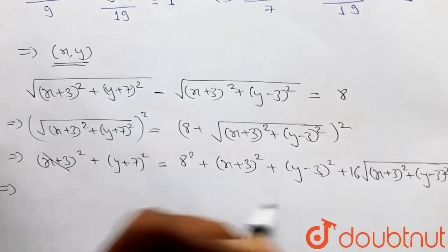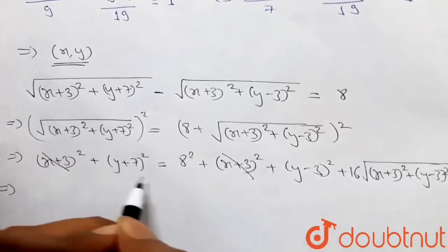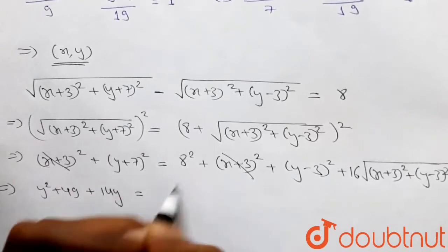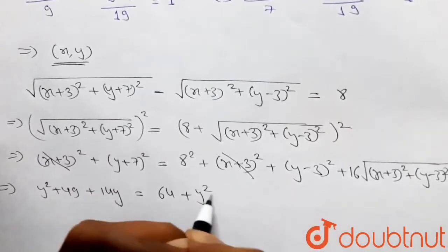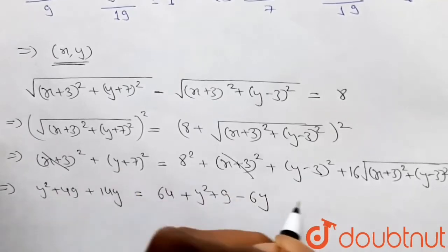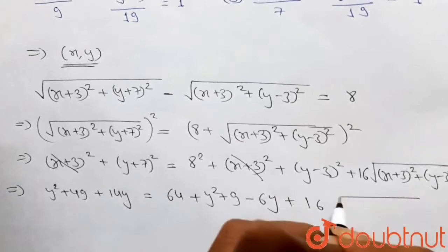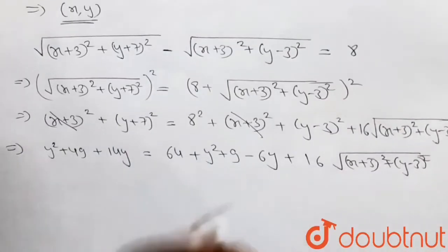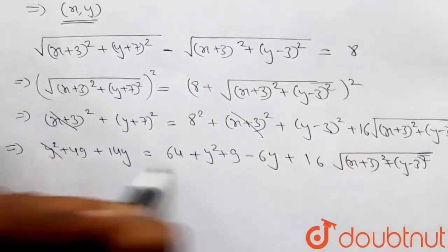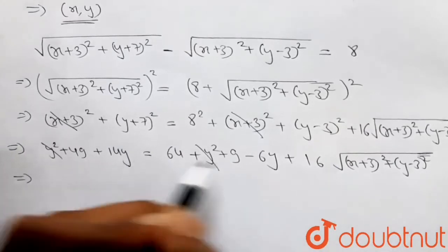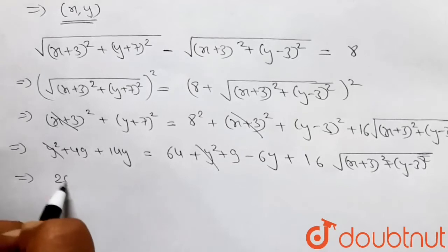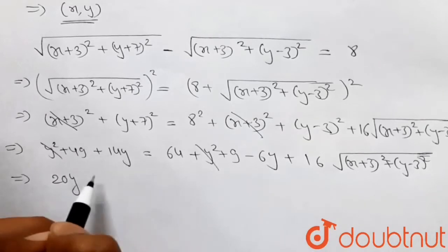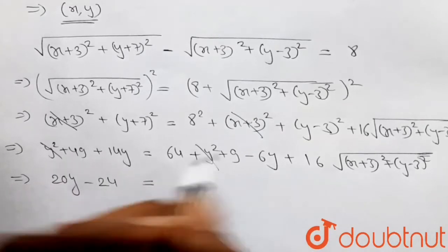The (x+3)² terms cancel. Expanding: y² + 49 + 14y = 64 + y² + 9 - 6y + 16√[(x+3)² + (y-3)²]. The y² terms cancel, and combining the y terms gives 14y + 6y = 20y on the left. On the right: 64 + 9 - 16 - 9 simplifies to give a constant.